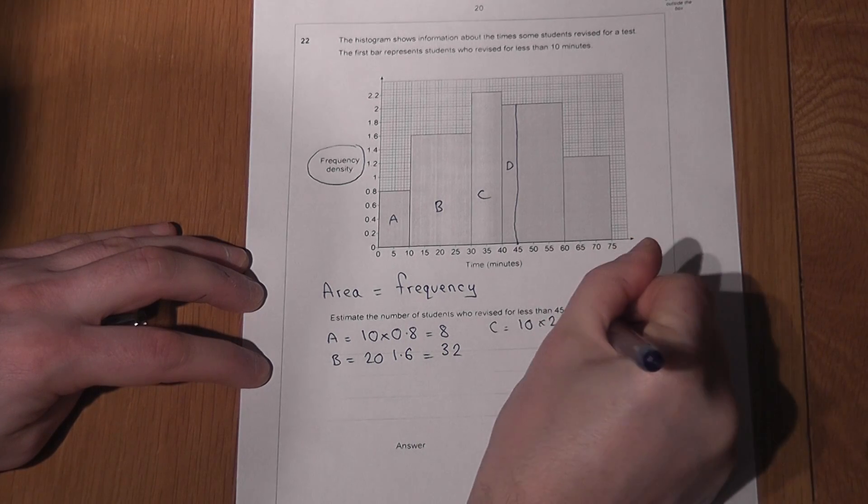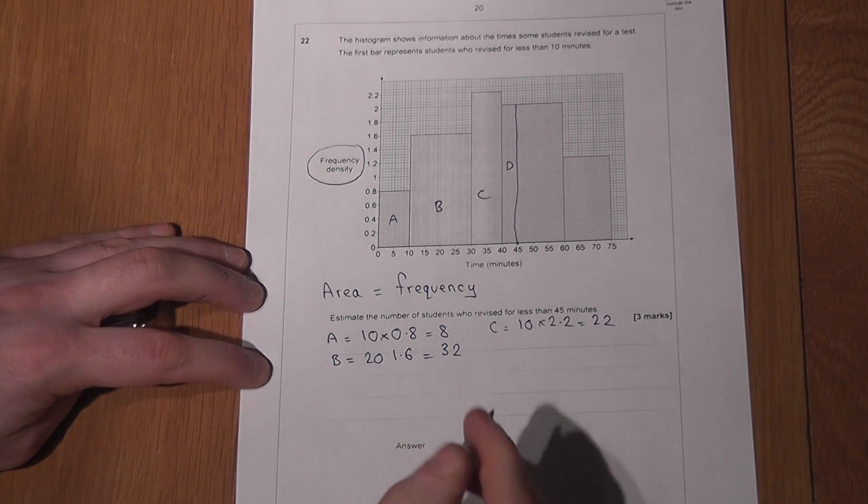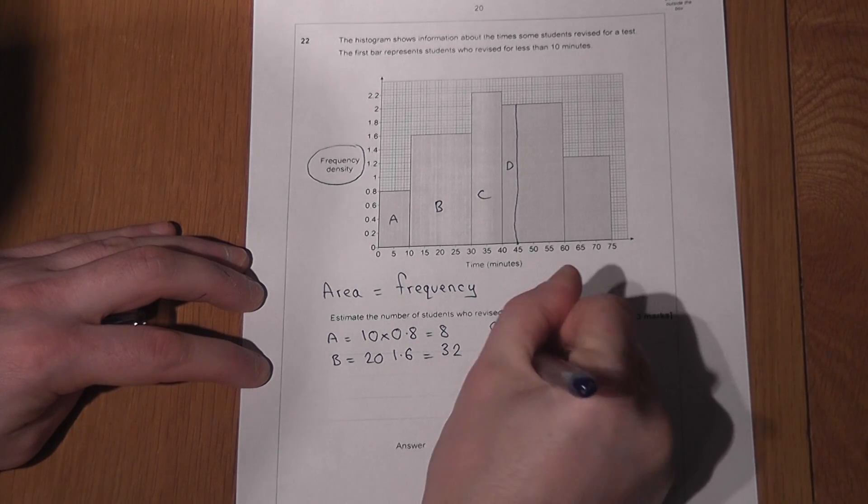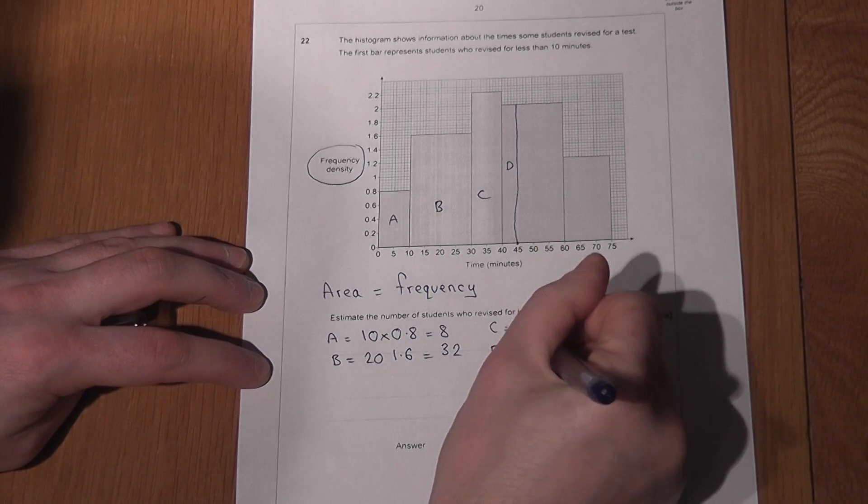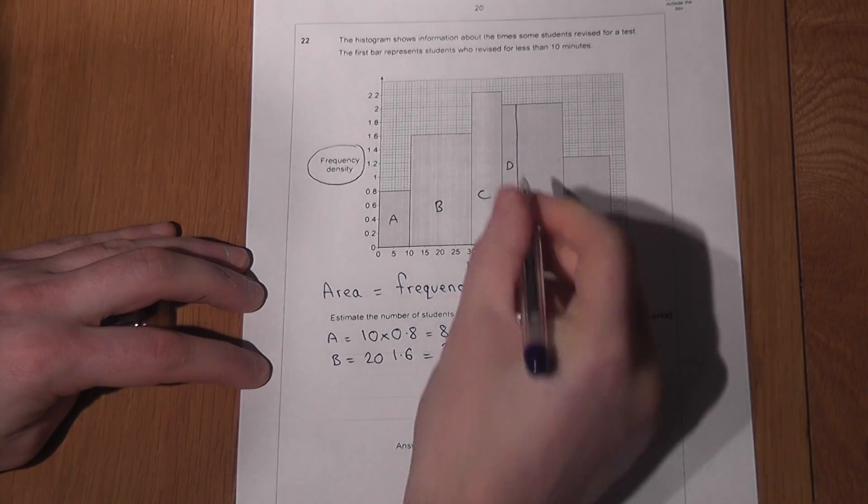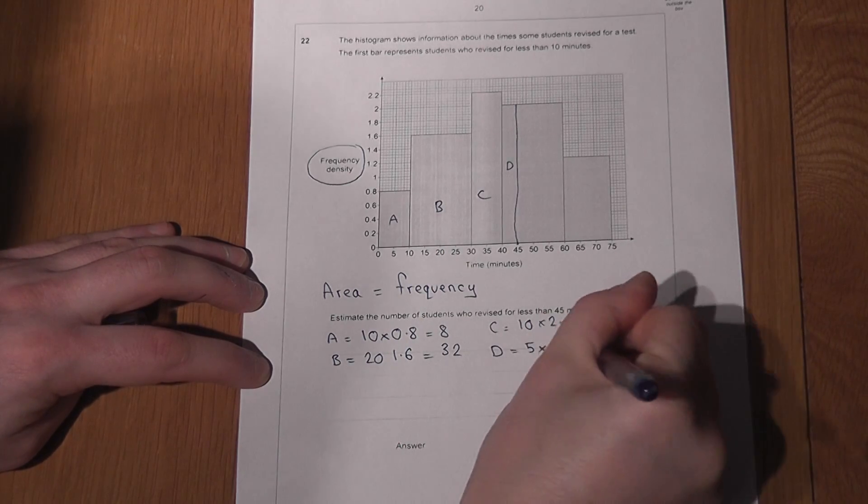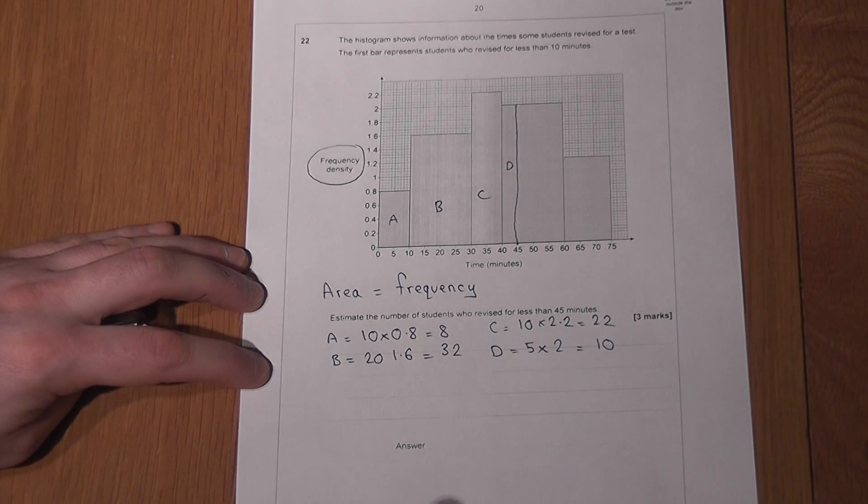Last but not least, area D up to 45, it's got a width of 5, it's got a height of 2, and 5 times 2 equals 10. So my estimate for the number of people who revised for less than 45 minutes...